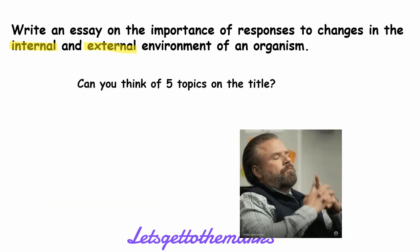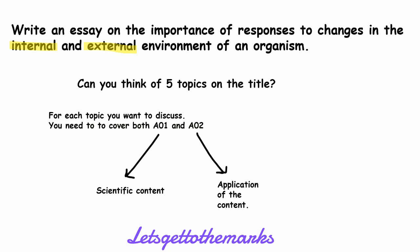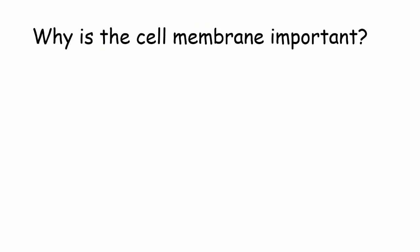For each of the five topics you can think of, you're going to need to cover AO1 and AO2. AO1 is basically the scientific content — your knowledge, your key terminology that you've learned off by heart for papers one and two. AO2 is the application — how it applies this content. The reminder in essay titles of this is the word 'importance'. Every essay title has the word importance, so we need to talk about the responses and then say why that's important.